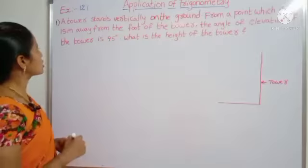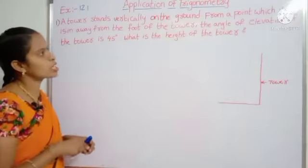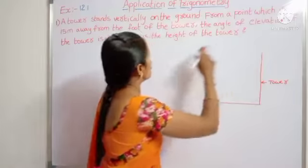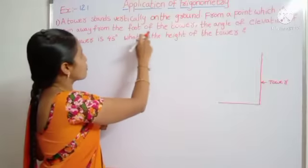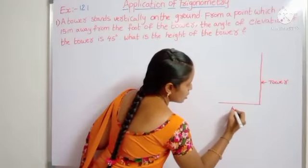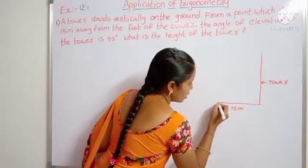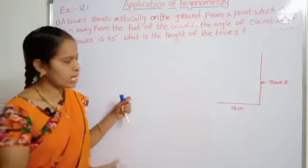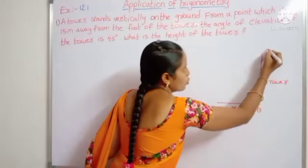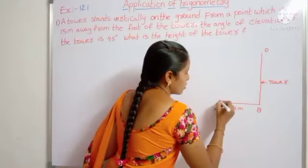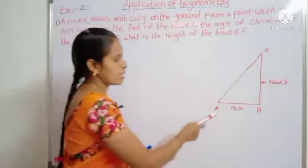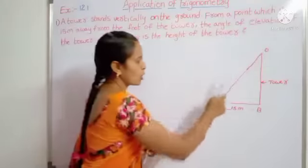From a point which is 50 meters away from the foot of the tower — from this point, 50 meters away from the foot of the tower. Here one observer is there. This is the point A, B, O.